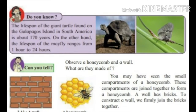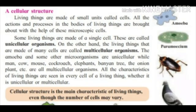You may have seen the small compartments of a honeycomb. These compartments are joined together to form a honeycomb. Similarly, a wall has bricks, and we firmly join the bricks together — this leads to a cellular structure. Living things are made up of small units like honeycombs, which are called cells. All the actions and processes in the body of every living thing are brought about with the help of these microscopic cells.